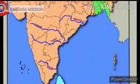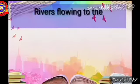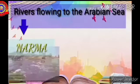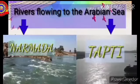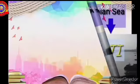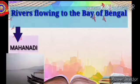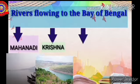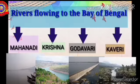Now, let us classify the Peninsular rivers on the basis of the ocean which they join. Rivers flowing to the Arabian Sea: Narmada and Tapti. Rivers flowing to the Bay of Bengal: Mahanadi, Krishna, Godavari, and Kaveri.